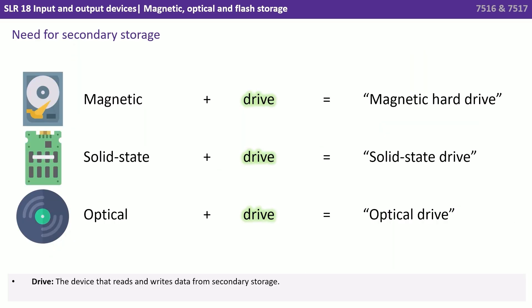We have three main types of devices we need to know about for the exam: magnetic drives, solid-state drives and optical drives. 'Drive' means the device that reads and writes data from secondary storage. The first word is the media — what the data is actually stored on — and together we have the label for the three types of secondary storage that we need to know about.